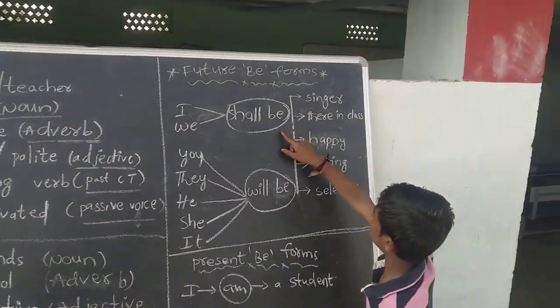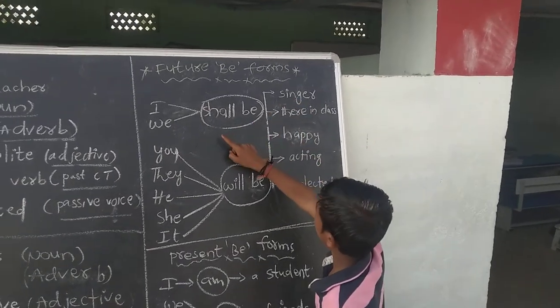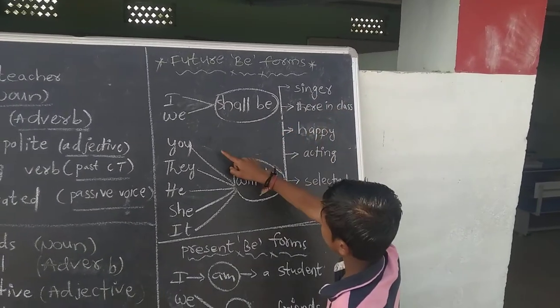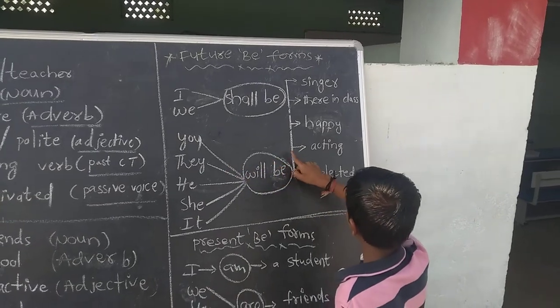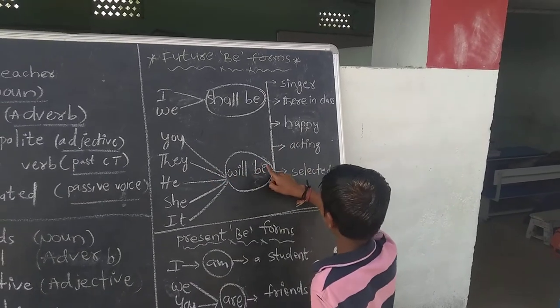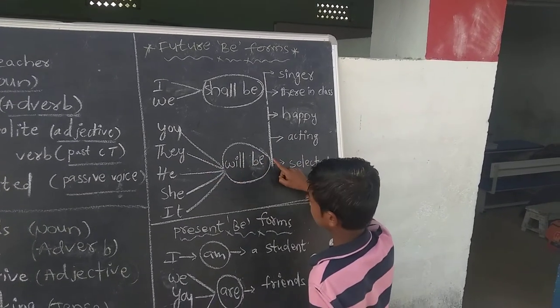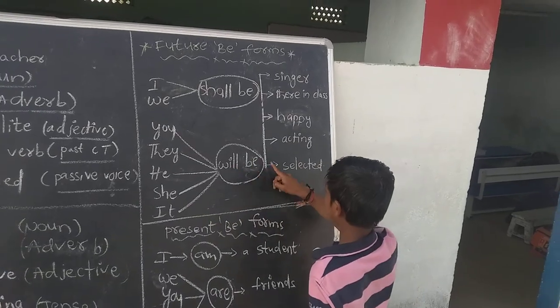I shall be, I shall be singer. We shall be there in class. You will be happy. They will be acting. He will be selected. She will be selected. It will be selected.